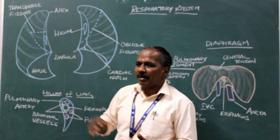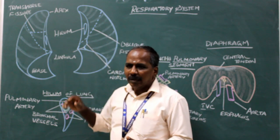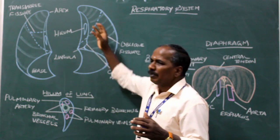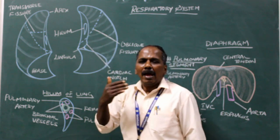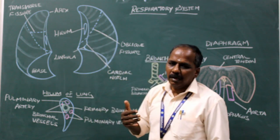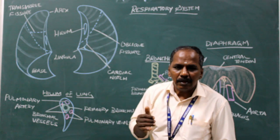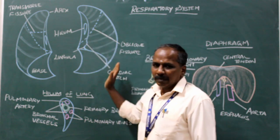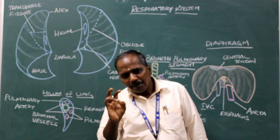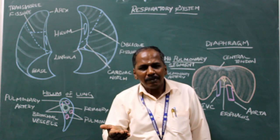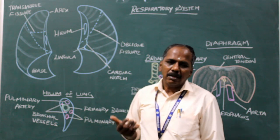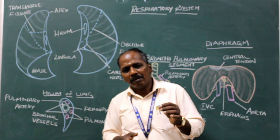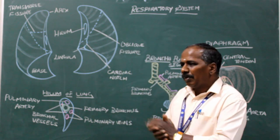In the left lung, the upper lobe has apical, anterior, posterior, superior lingula, and inferior lingula segments — five segments in the upper lobe. The lower lobe consists of superior (apical), anterior basal, posterior basal, medial basal, and lateral basal segments.